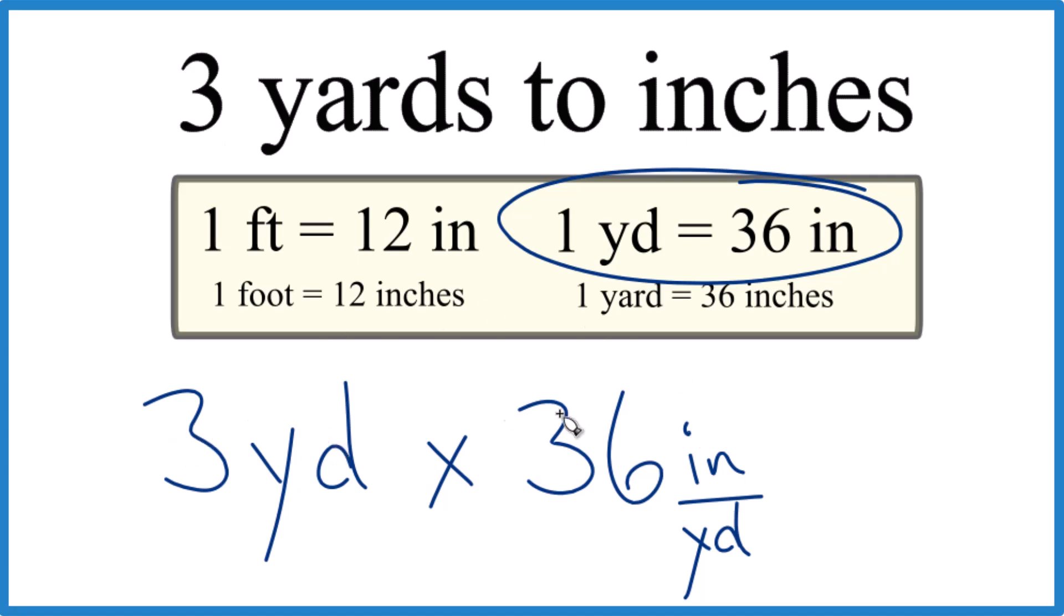So three times 36, three times 30 is 90, three times six is 18. So 90 plus 18, 108.